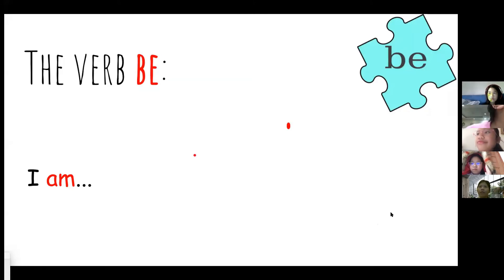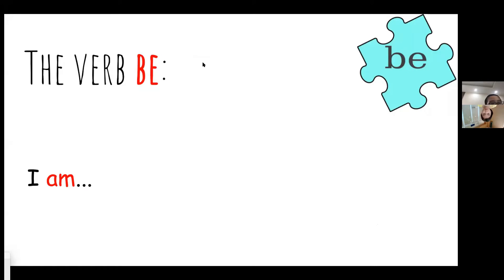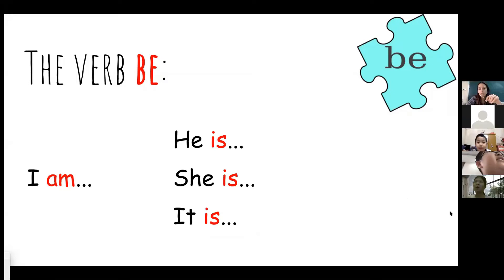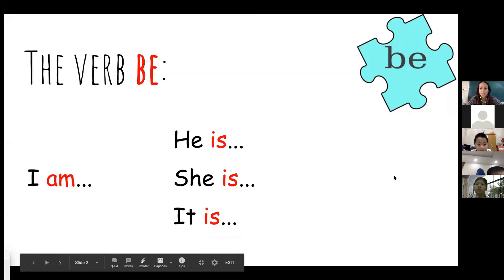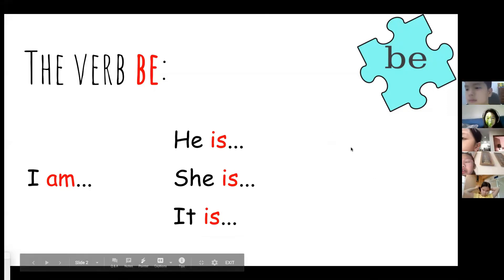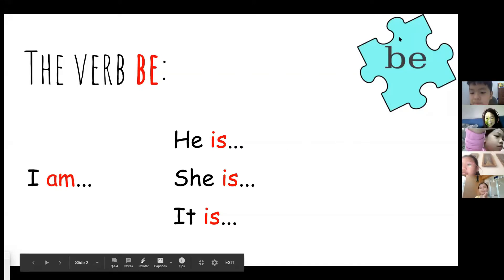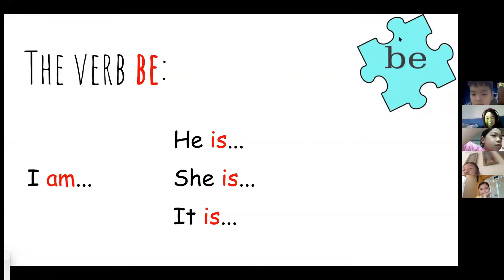Who remembers this? We've learned this many times. Which pronouns or subjects do we use the verb 'is' with? He, she, or it — we use 'is.' For example, 'zero is correct' — I wouldn't say 'zero am correct,' that doesn't make sense. Bill is eating, he is smiling. It is cloudy outside.